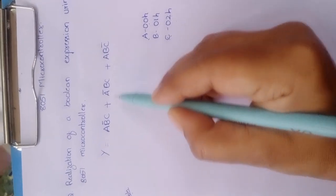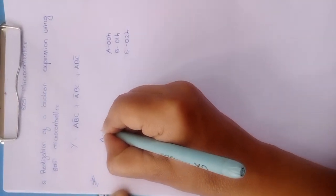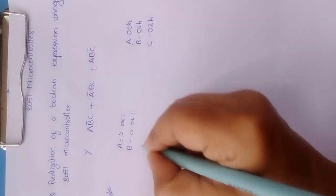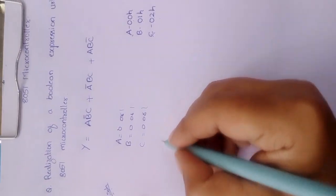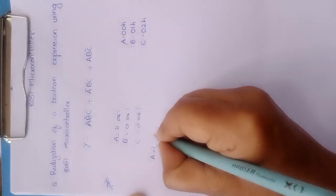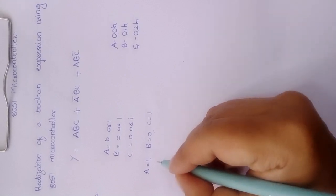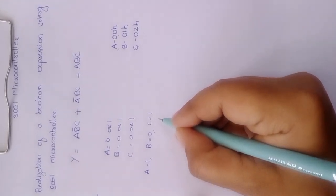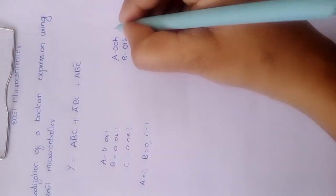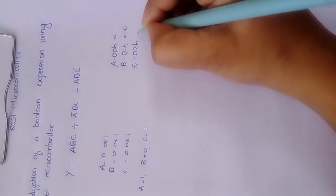Whenever we verify this boolean expression, we must assign values of 0 or 1 to a, b, and c. For this example, let us consider a equals 1, b equals 0, and c equals 1. This is not mandatory — any other values can be chosen to verify the expression. We have chosen these values for the purpose of this explanation.